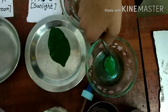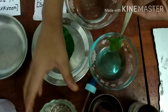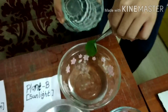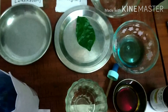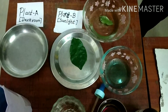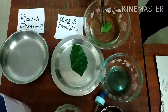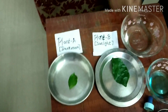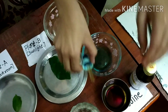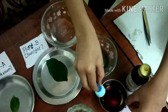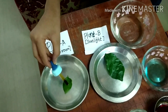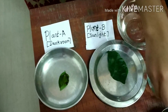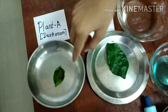Then we will take it out and wash the leaf with normal cold water. Now we will put some iodine drops on it and let it sit for some time.